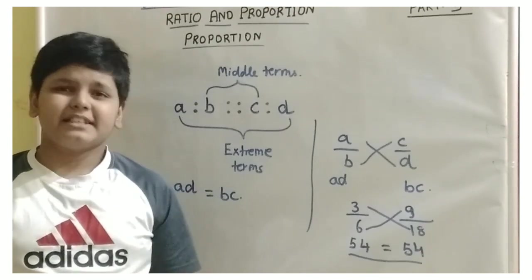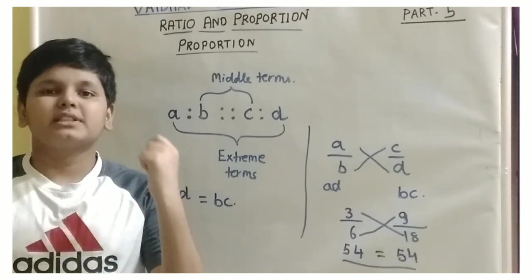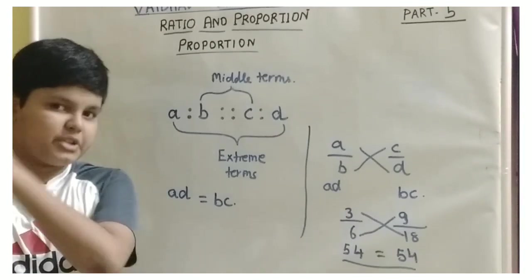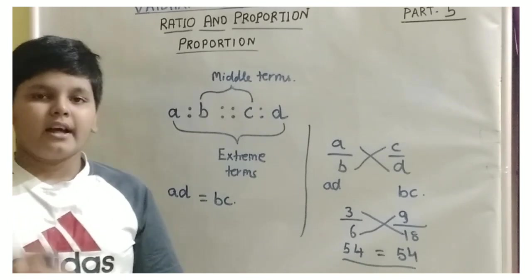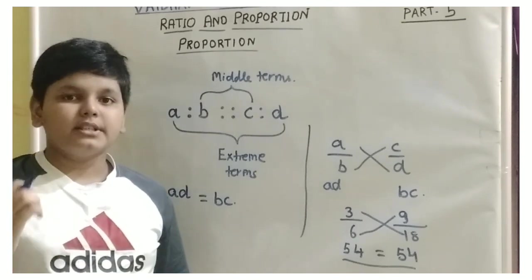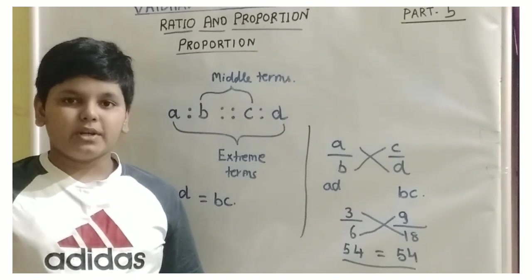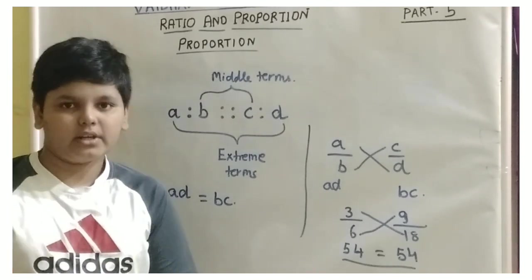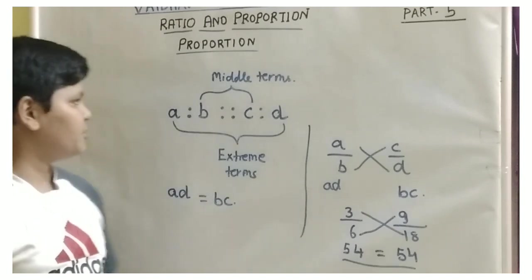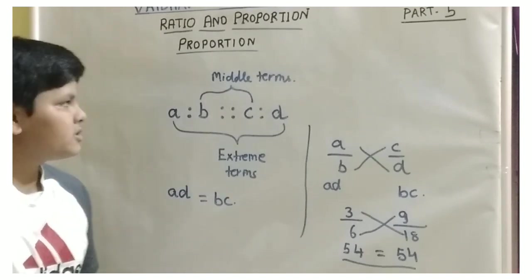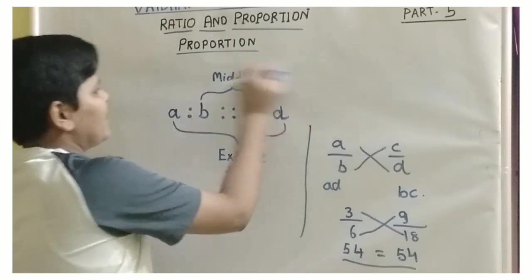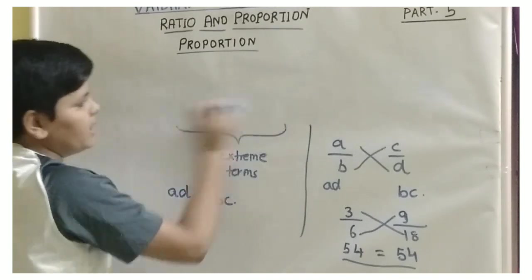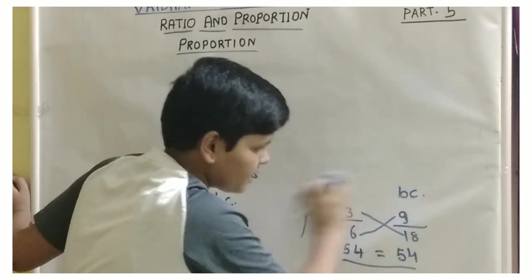In simple terms, we can say that proportion is just the equality of two ratios. Proportion explains whether two ratios are equal or not — that is a proportion. So let us take one example to understand proportion.